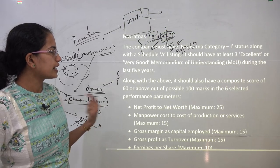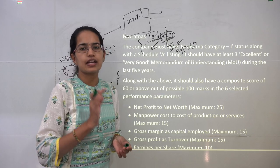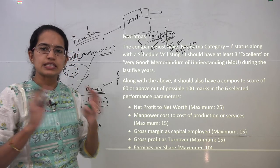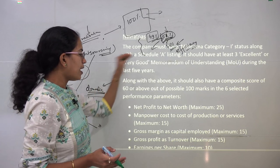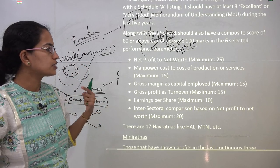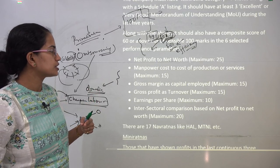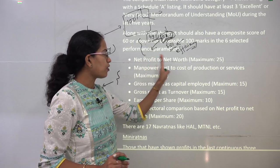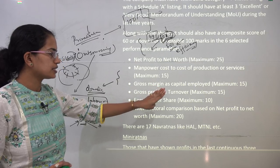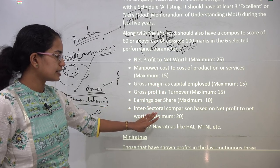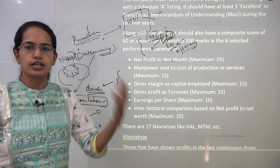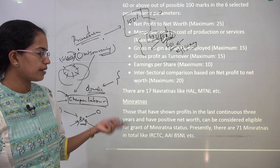Navratna companies are those with consistently excellent or very good performance for the last three years and a score of more than 60 out of 100 on six parameters: net profit to net worth, manpower cost to total production cost, gross margins, gross profits, earnings per share, and inter-sectoral comparison. Navratna companies include HAL (Hindustan Aeronautics Limited) and MTNL, among others.